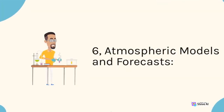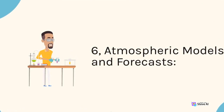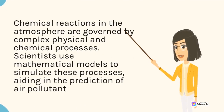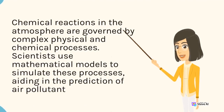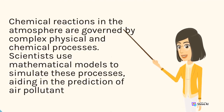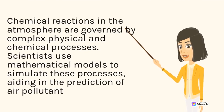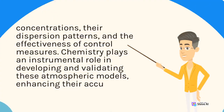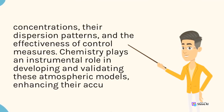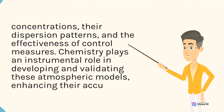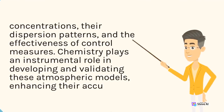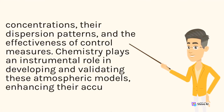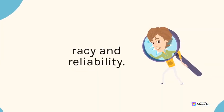6. Atmospheric Models and Forecasts. Chemical reactions in the atmosphere are governed by complex physical and chemical processes. Scientists use mathematical models to simulate these processes, aiding in the prediction of air pollutant concentrations, their dispersion patterns, and the effectiveness of control measures. Chemistry plays an instrumental role in developing and validating these atmospheric models, enhancing their accuracy and reliability.